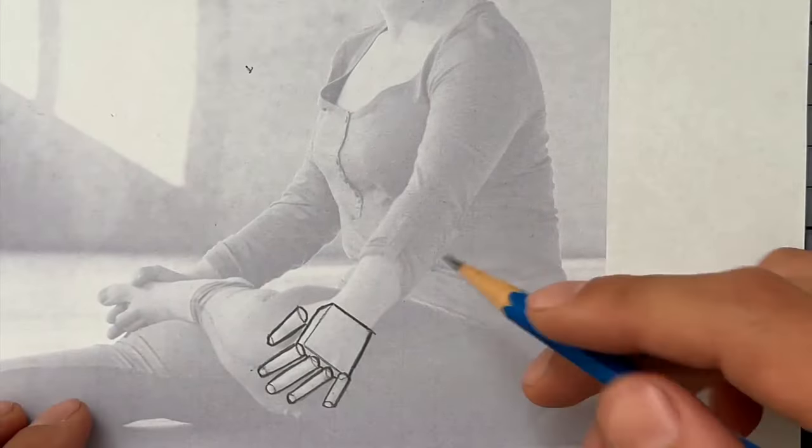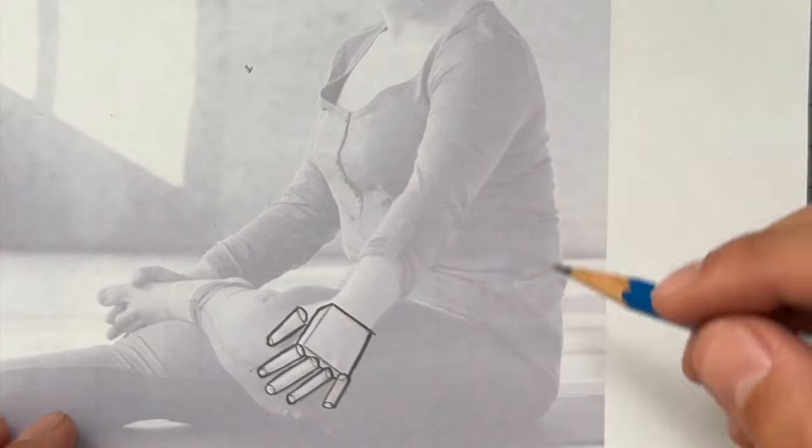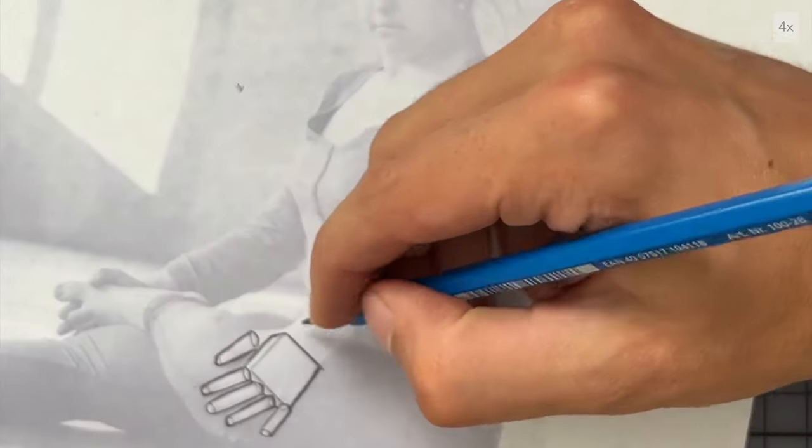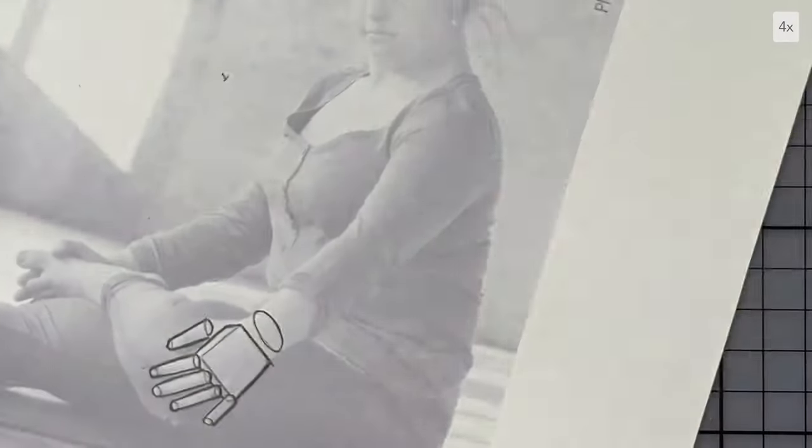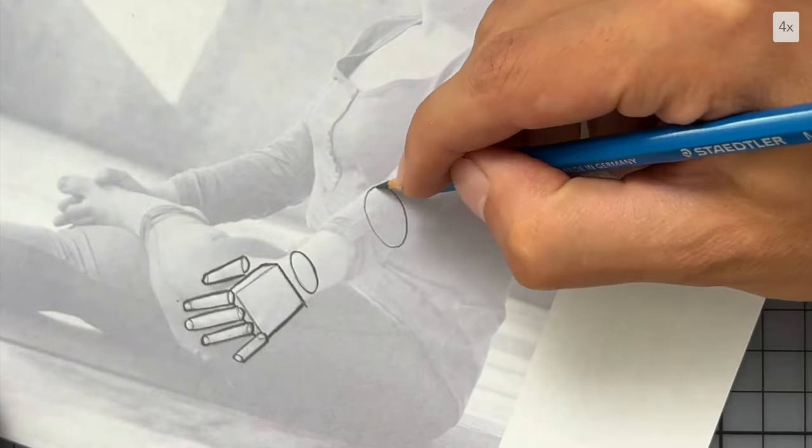Let's work on the arm now. Like the fingers, it will be a cylinder shape. I'm taking a moment to understand the position of the arm in 3D space. The ellipses at the ends of the cylinder are important to show the perspective.